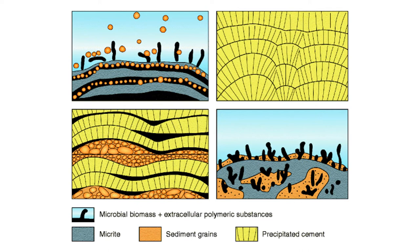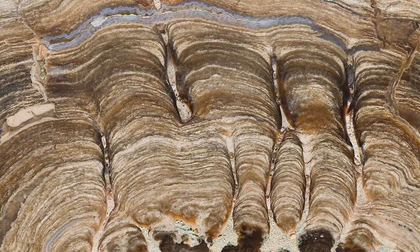Over time, the microbial mat will recolonize the surface of the stromatolite and grow on top of the new sediment. Then the process will repeat itself again and again — sediment will be trapped, bound, and cemented by the microbial mats onto the surface of the mound. The stromatolite will grow upward layer by layer. This repetitive cycle of sedimentation produces the layers and laminae of the stromatolite.